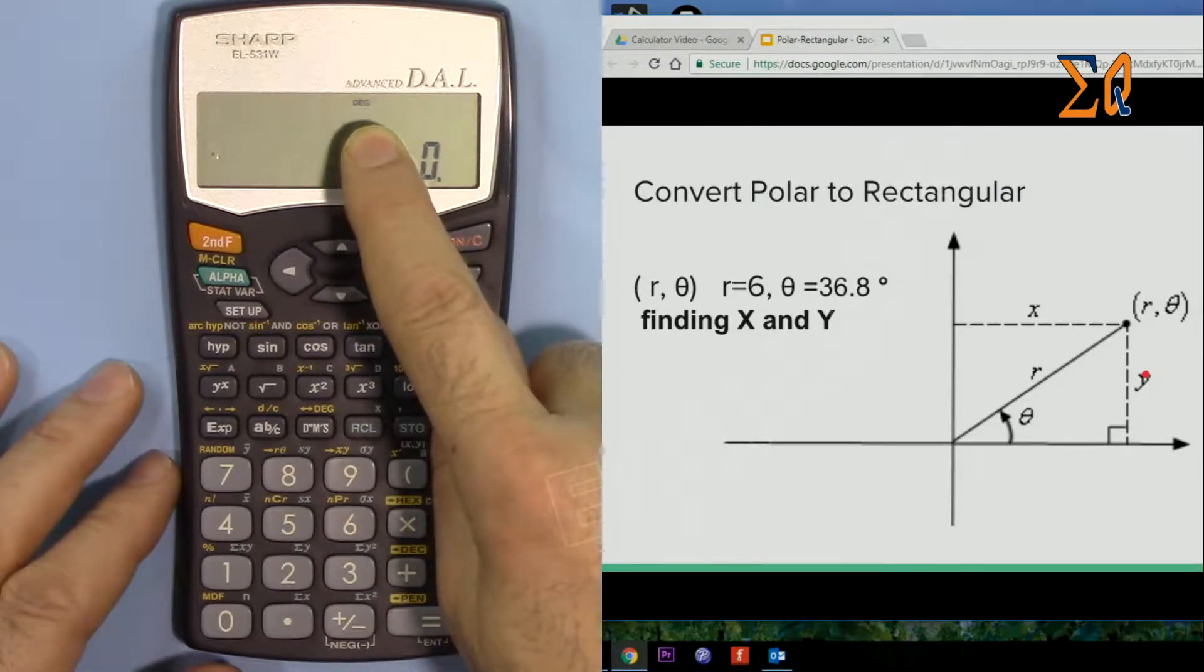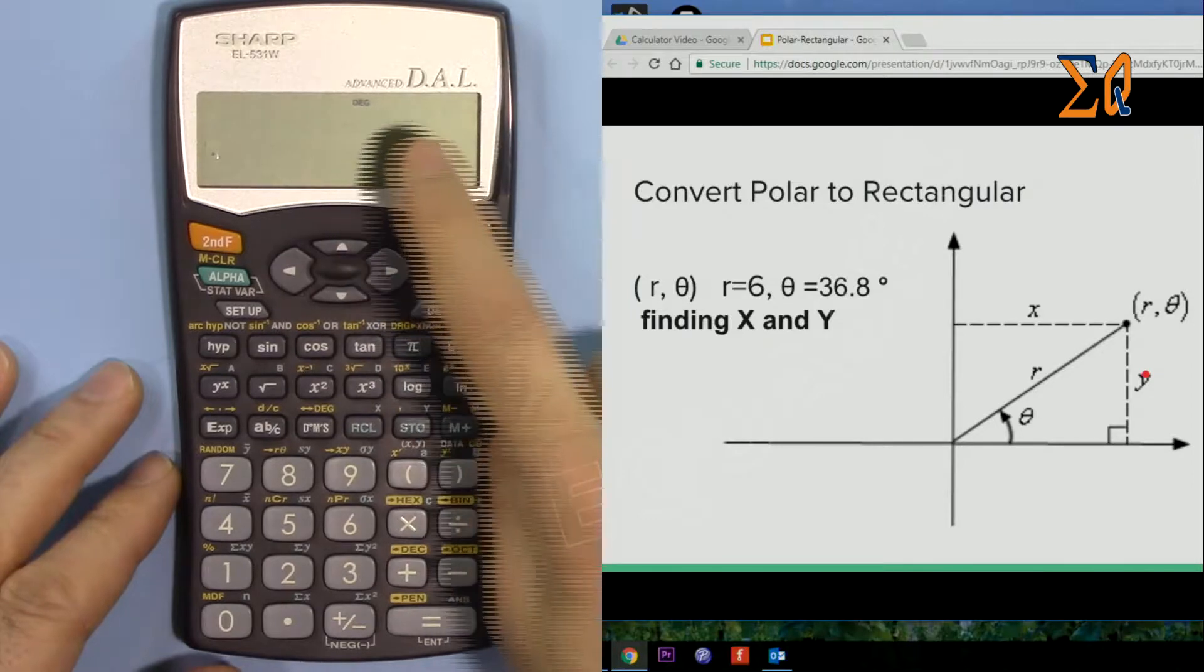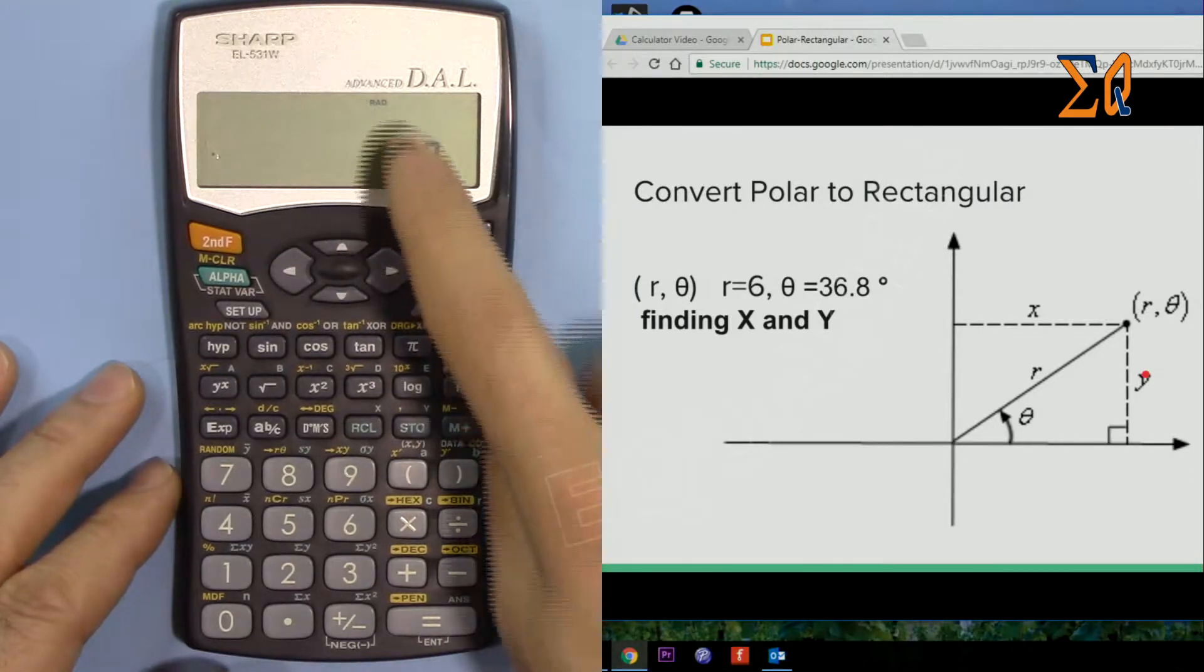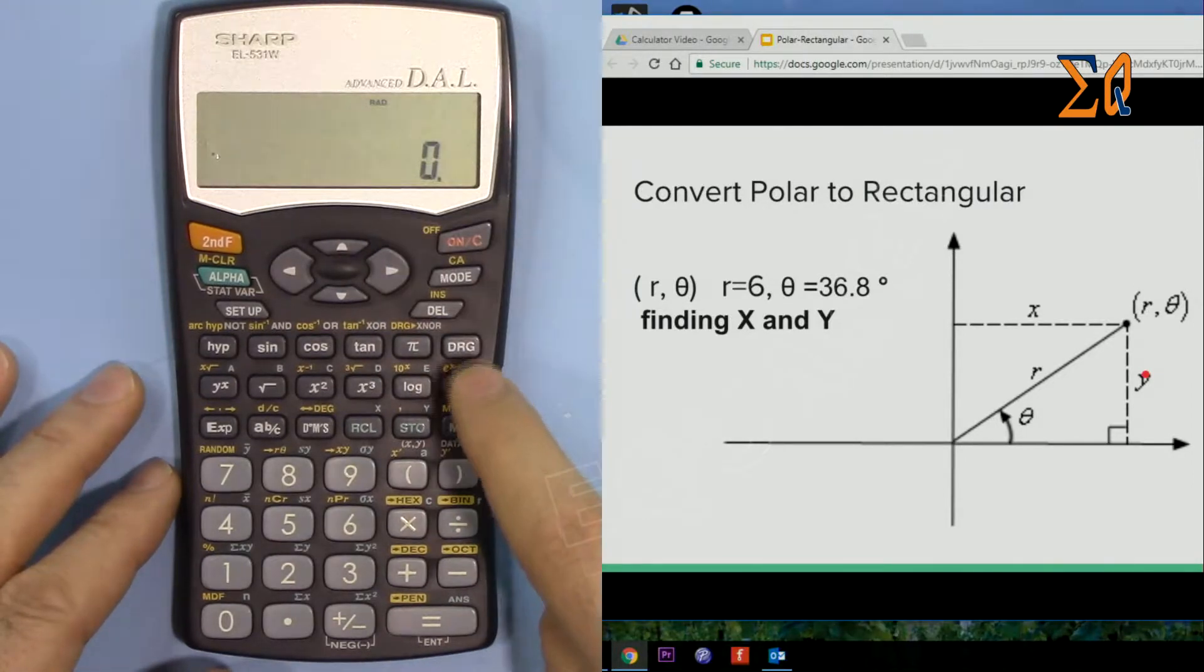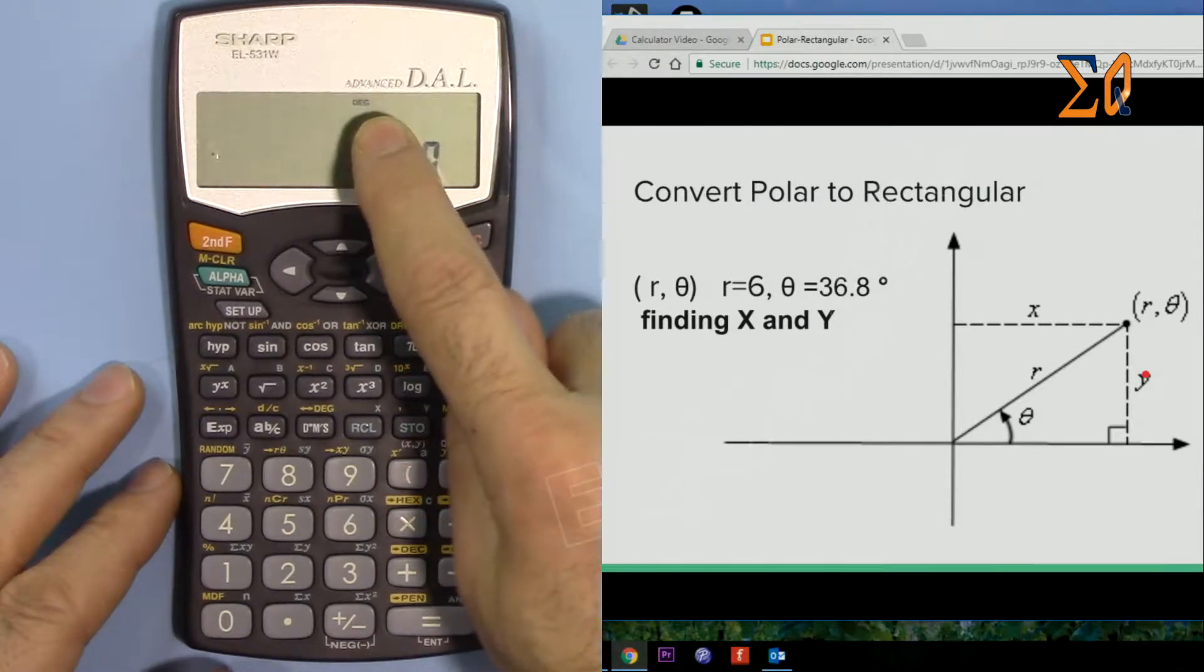We have to make sure that the calculator is in degree mode because we're working with degrees. If not, just press this button—it goes to radian, press it again it goes to gradient, and then degree. So we are in degree mode.